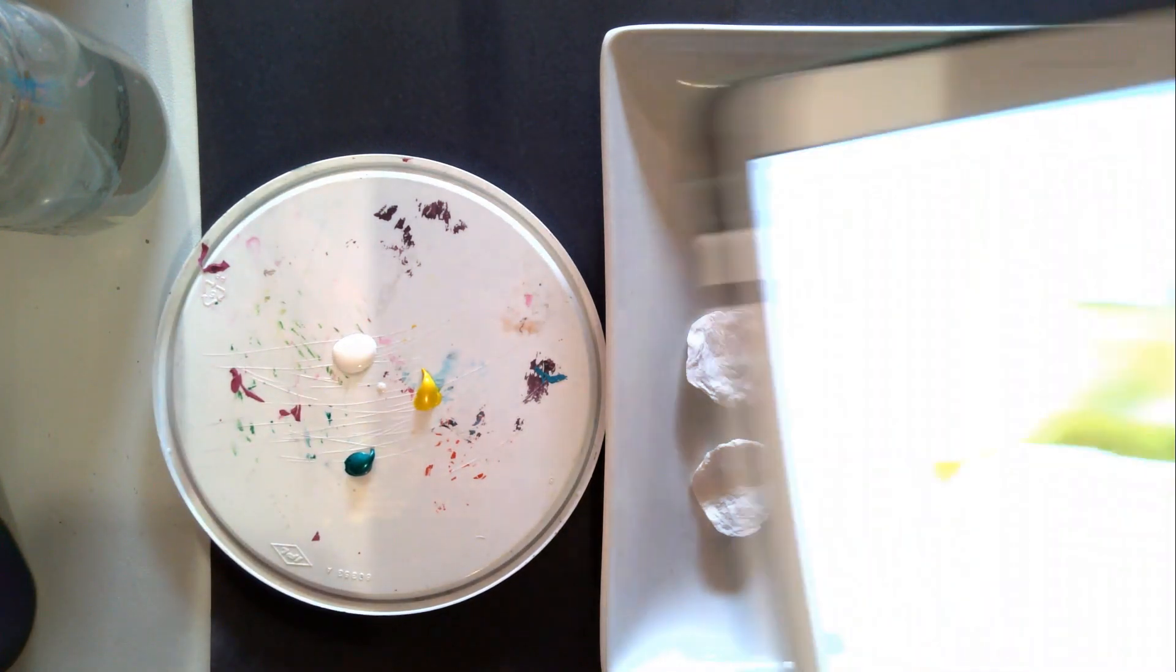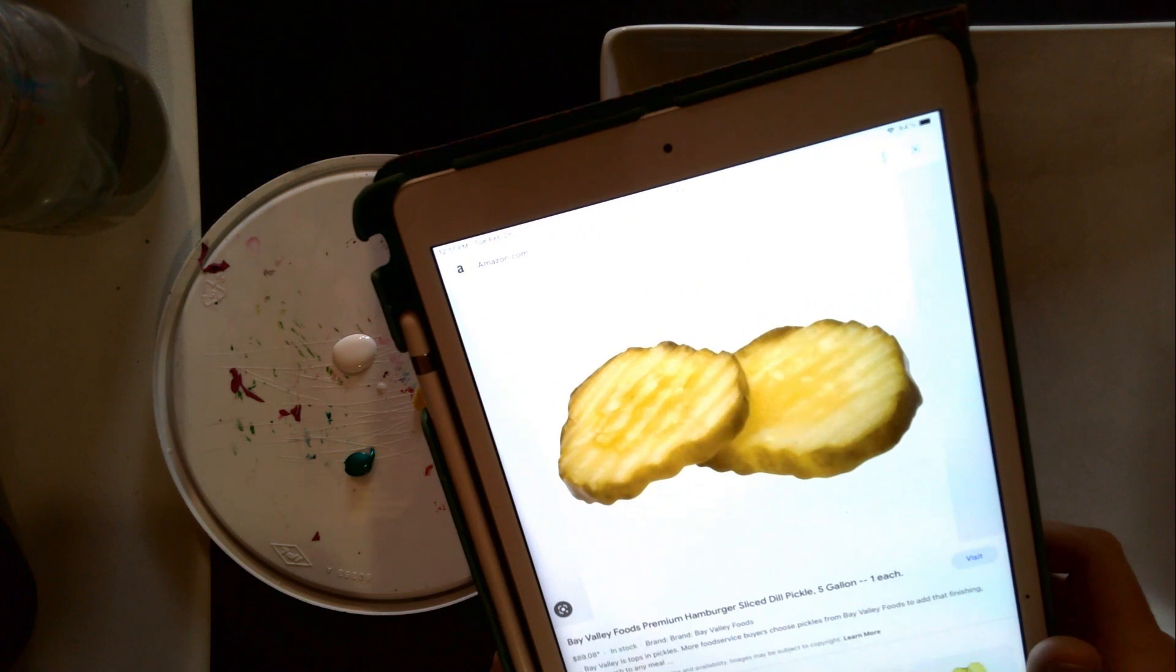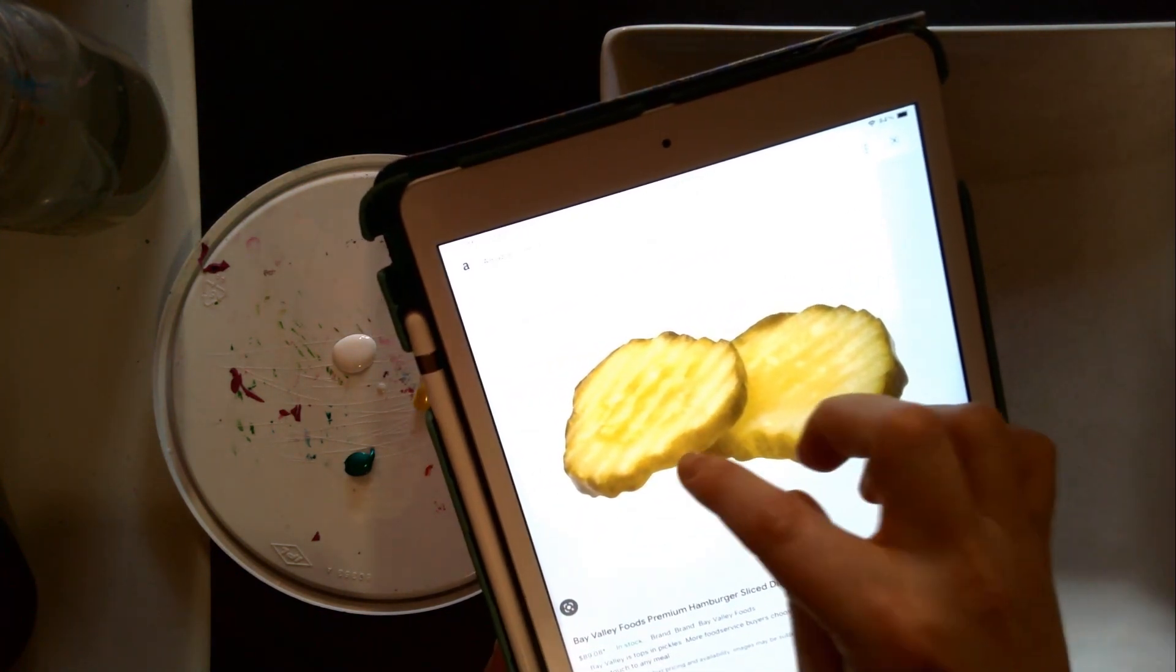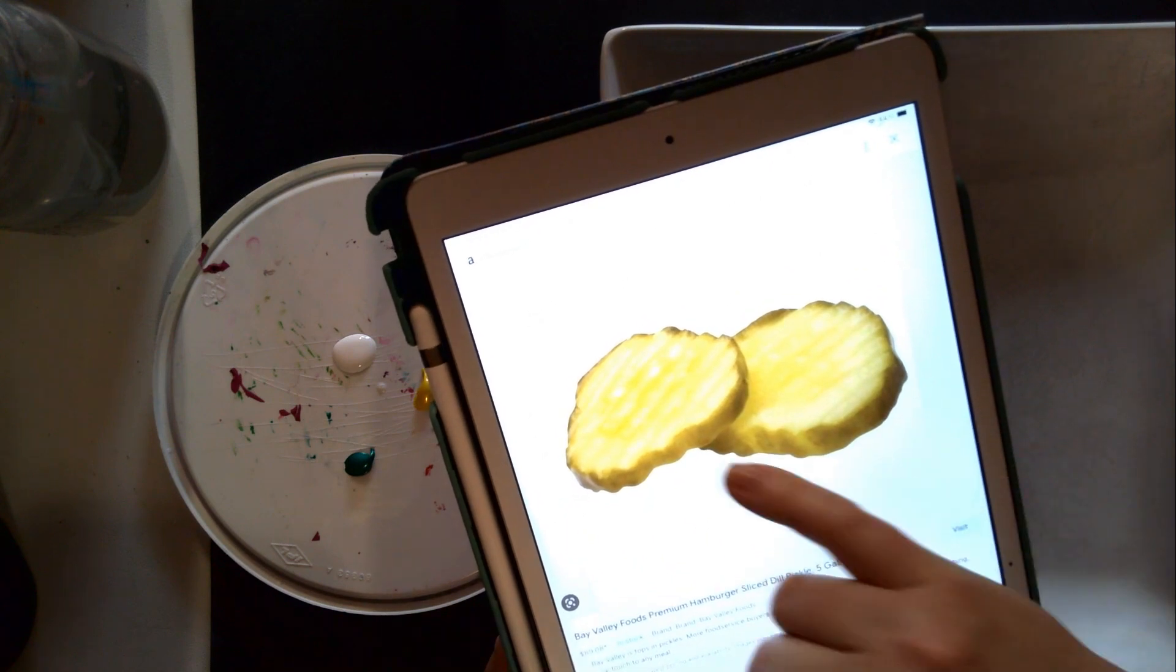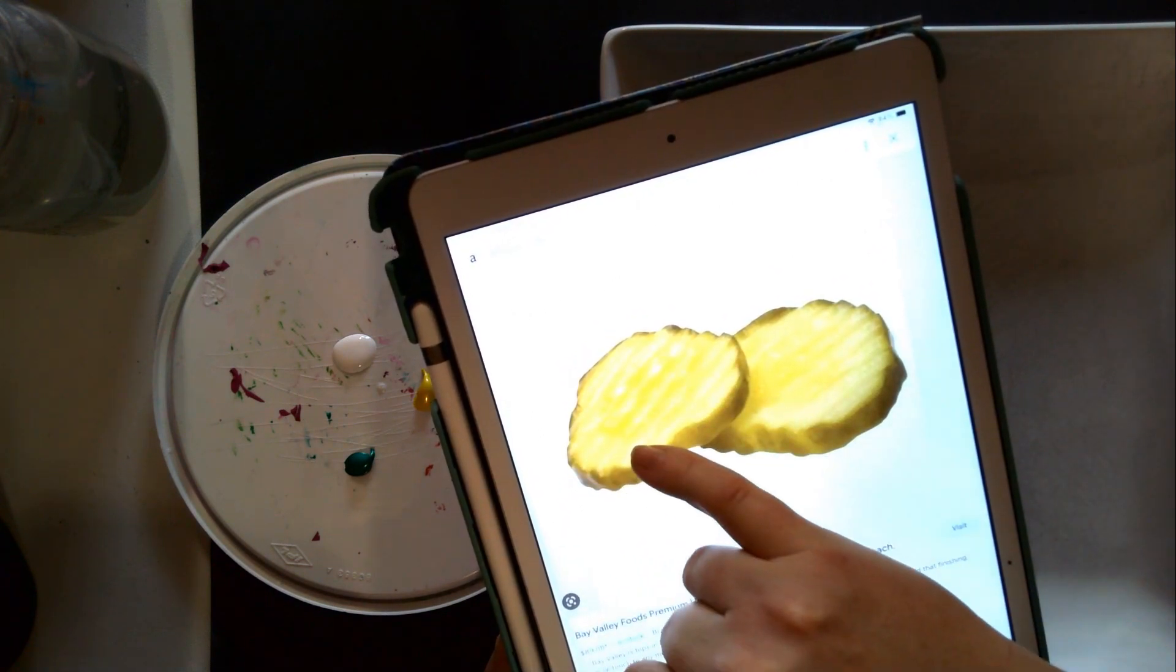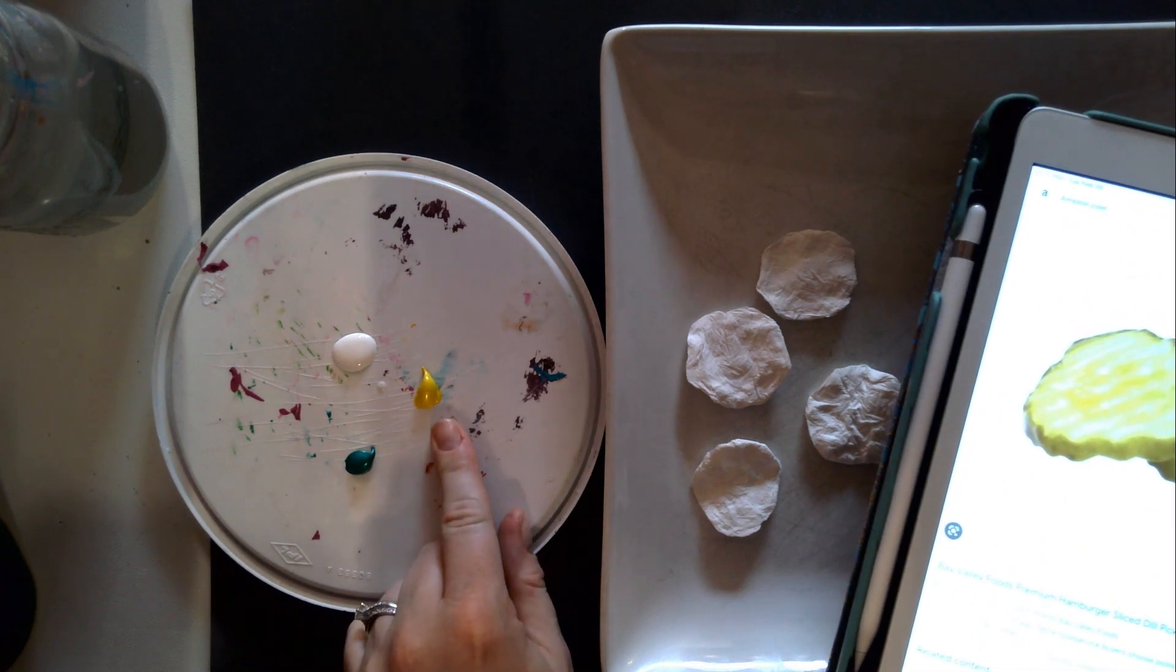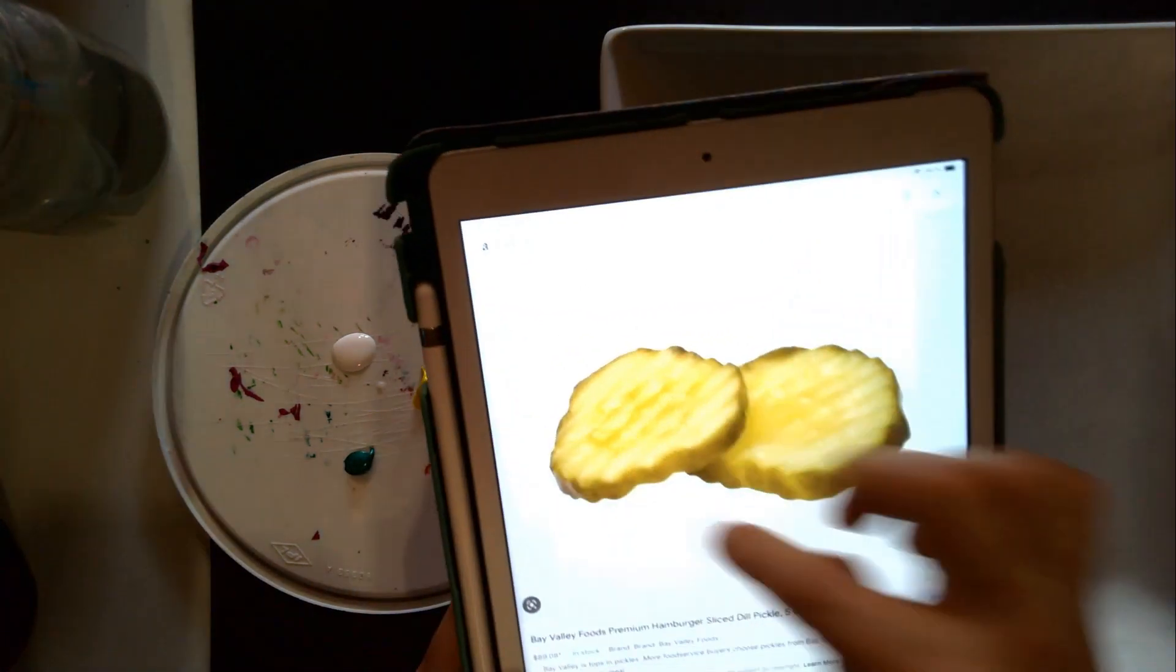What I've done is found a reference picture online of pickles because I want to see what they actually look like, so I can try and replicate that colour. I notice there's quite a bit of yellow in here compared to the green I've got on my palette, so I'm going to add a little bit of yellow to see if I can replicate that colour.